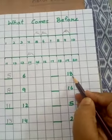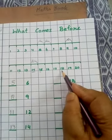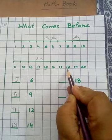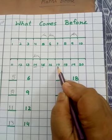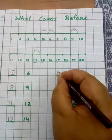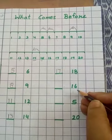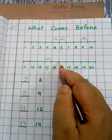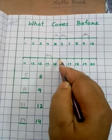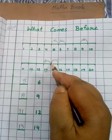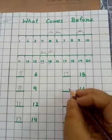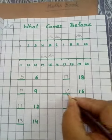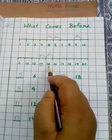Next number is 18. In the number line, 18 is here. When we go in backward direction, 17. Yes, 17 comes before 18. Next number is 16. 16 is here. When we count again in backward direction, we go to 15. 15 comes before 16. क्यूंकि 16 के just पहले कौन सा number है? It's 15.